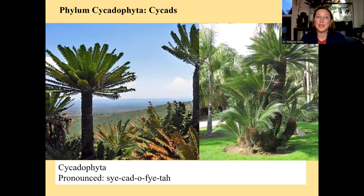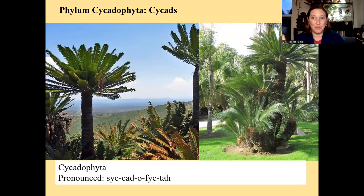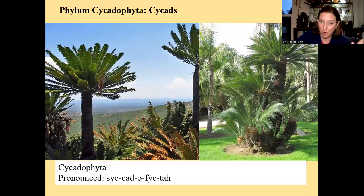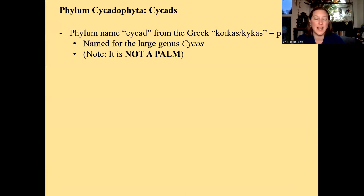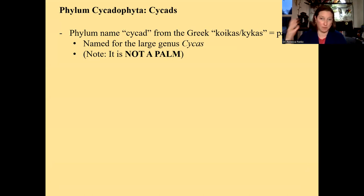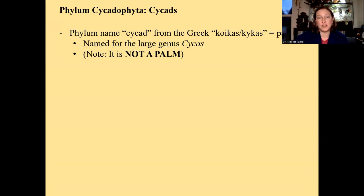Cycads are in the phylum Cycadophyta — you just put 'cycad' and then '-ophyta' at the end, which is handy. Even though they kind of look like a palm tree, they are not palm trees. The word 'cycad' actually comes from the Greek word meaning 'palm,' because whoever first described it thought it looked like one — but it's not. Palms came along millions and millions of years later. Cycads are also named for the large genus Cycas. If I ask you if a cycad is a palm, it is not a palm.